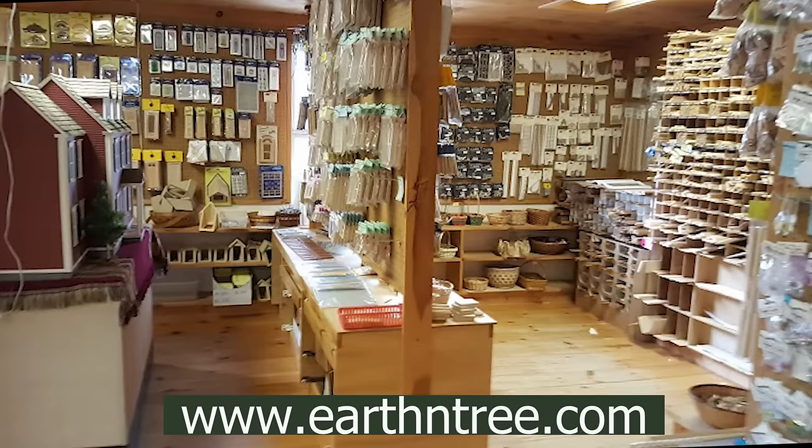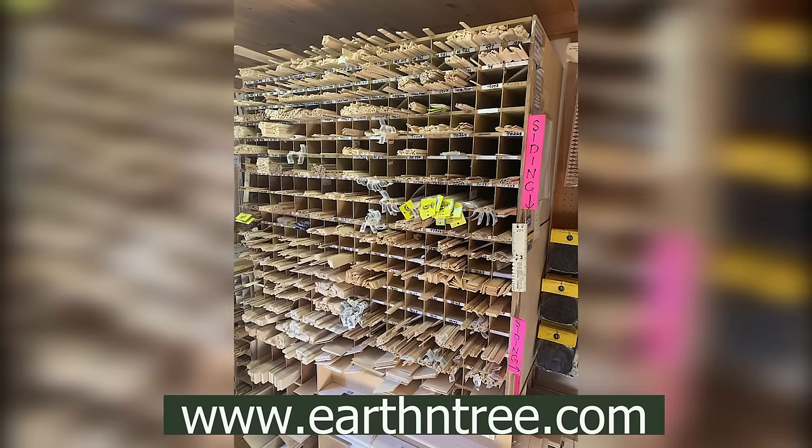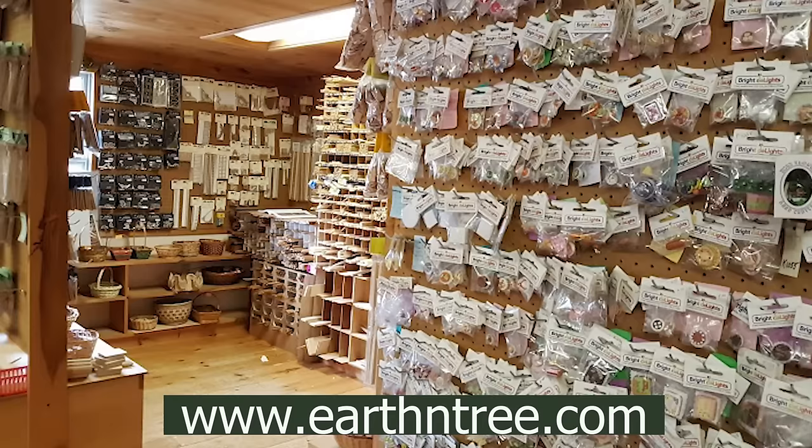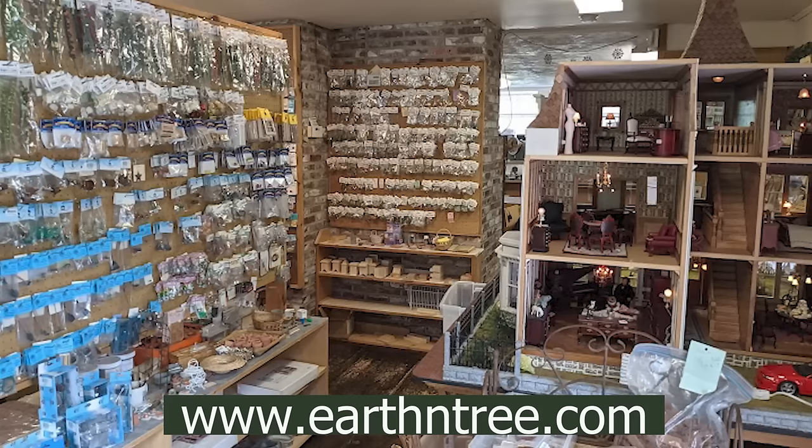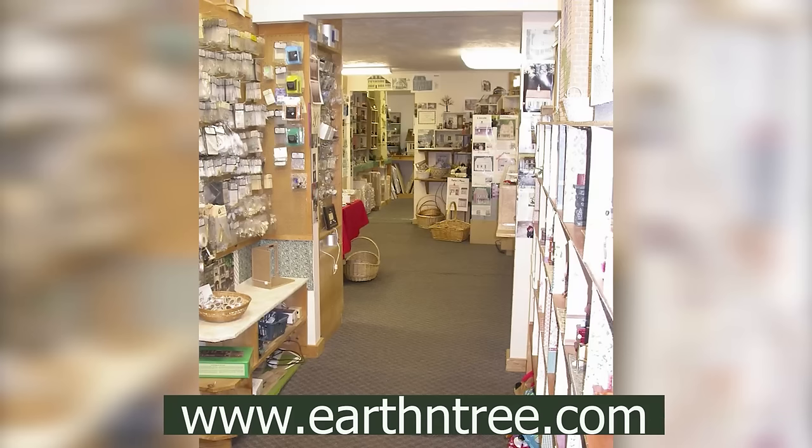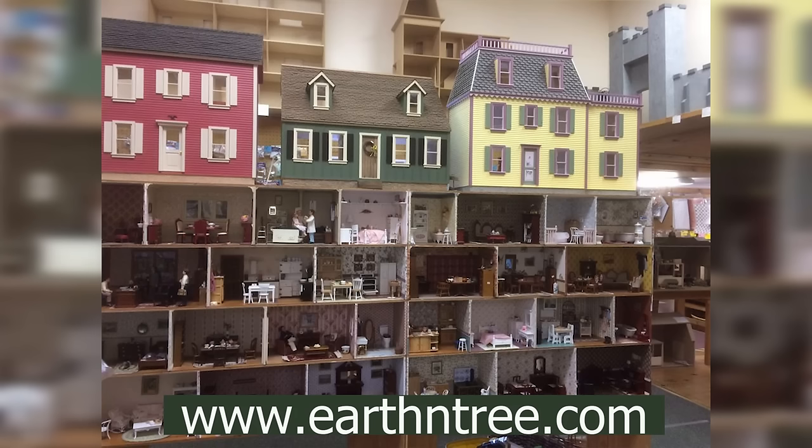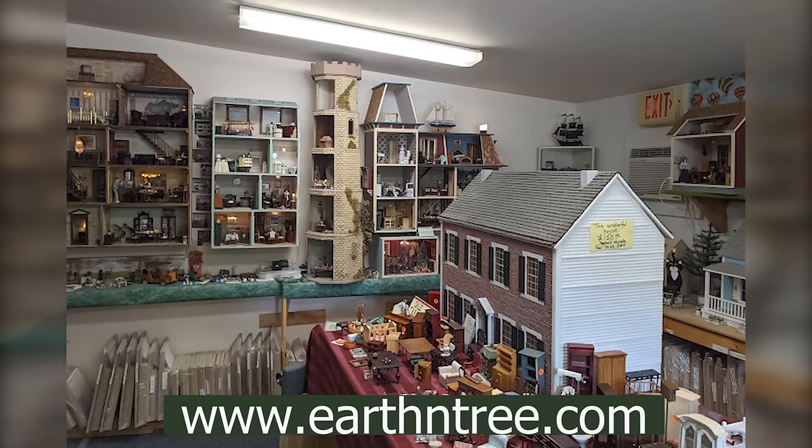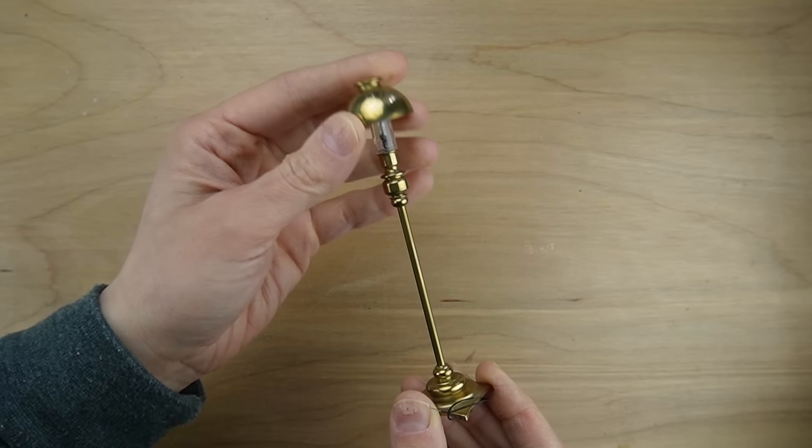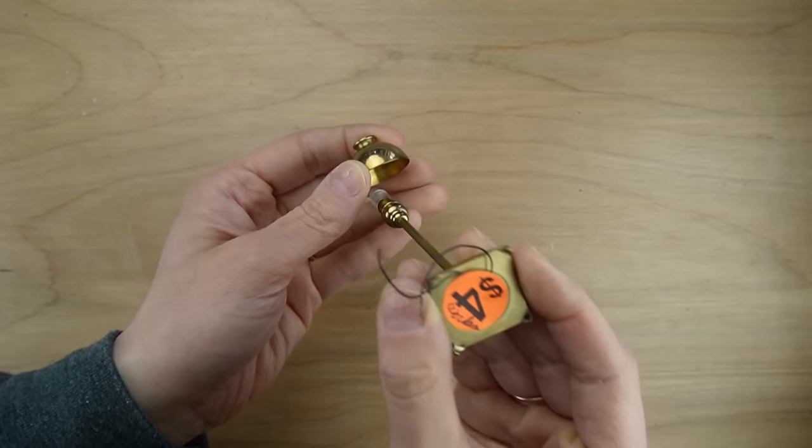Earth and Tree Miniatures is technically a small business, but it's a 3,000 square foot dollhouse miniature store located in Amherst, New Hampshire, that's been in business for over 30 years. I shopped in person, but you can also visit their website. When I got to Earth and Tree Miniatures, the first thing I did was make a beeline for the sales table.